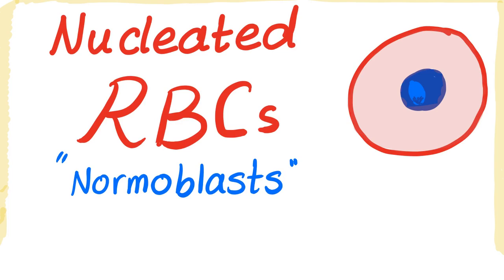And we have shifted our attention to the red cell inclusions, which is stuff included in the red blood cells, such as Howell-Jolly bodies, such as parasites in the red blood cells, also polychromatophilia, and last we have nucleated red blood cells.